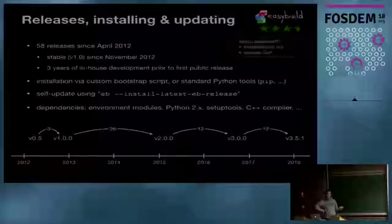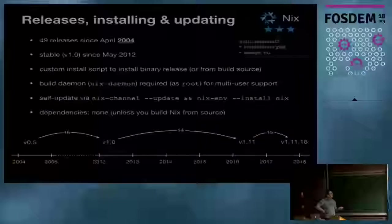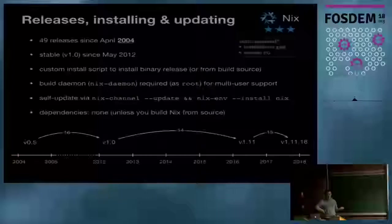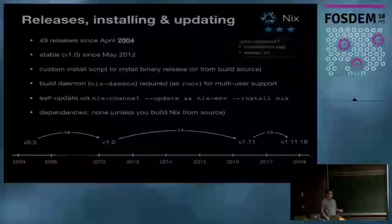Nix has been around since 2004 and stable since 2012 with version 1.0. It has an install script for the binary release or you can build from source. You need to get a build daemon running, which requires root — so you need sudo to install Nix, but not to run it. A normal user can talk to Nix and get software installed through the daemon. Self-update support is there as well, and minimal dependencies unless building from source.